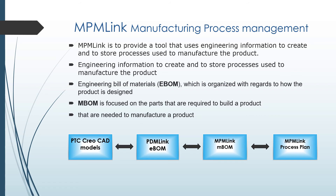MPMLink stands for Manufacturing Process Management. It is a module in Winchill used to manage engineering information and create and store the processes required to manufacture a product. The sequence goes: you create a PTC Creo CAD model, transform it to an engineering bill of materials (EBOM) organized around how the product is designed, then it moves to the manufacturing bill of materials (MBOM) which focuses on the parts needed to manufacture the product, and finally to the MPMLink process plan. This is where MPMLink is of great use in product management.